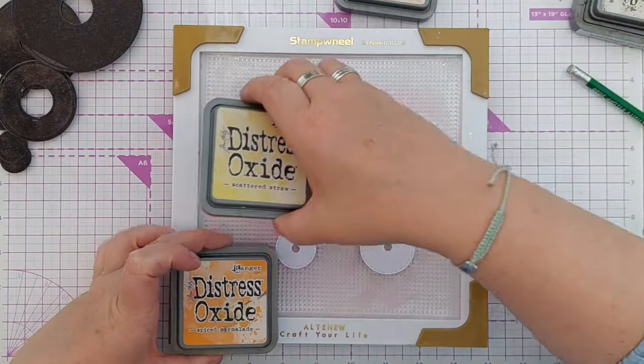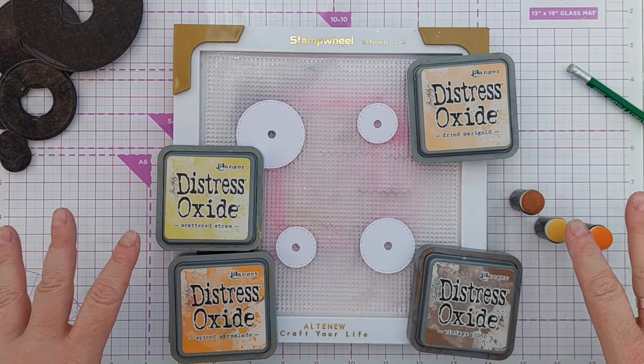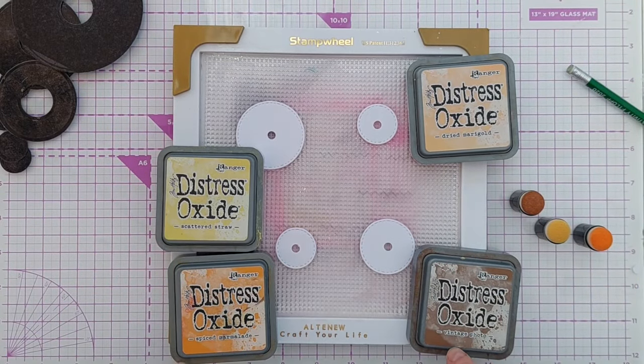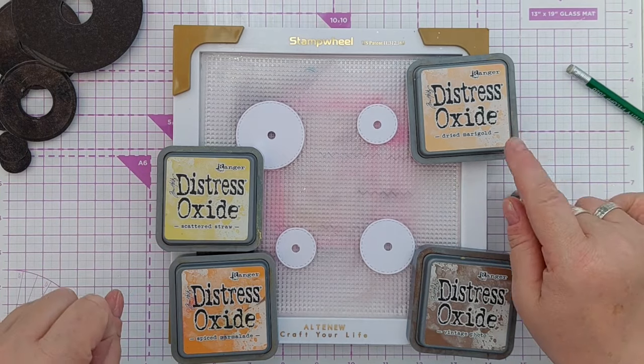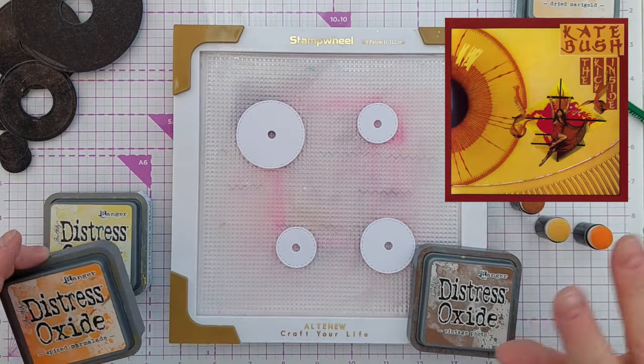To color my little discs here, I'm going to use these warm colors. We've got Vintage Photo, Spiced Marmalade, Scattered Straw, Dried Marigold, and these are inspired by one of his favorite albums.